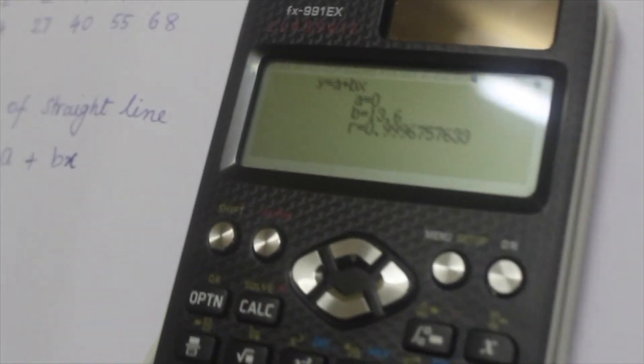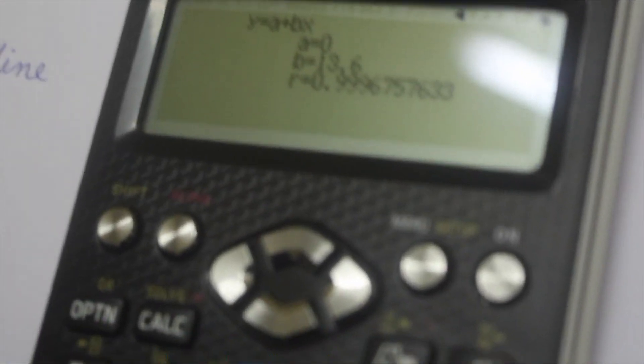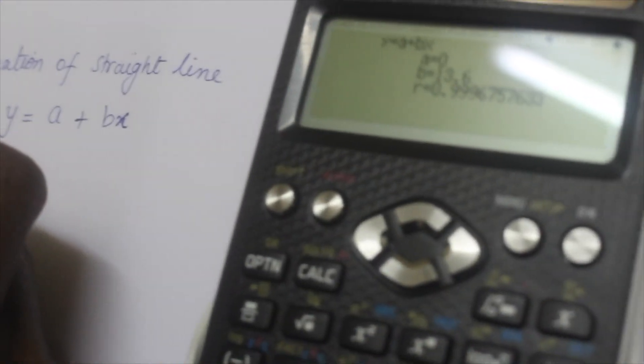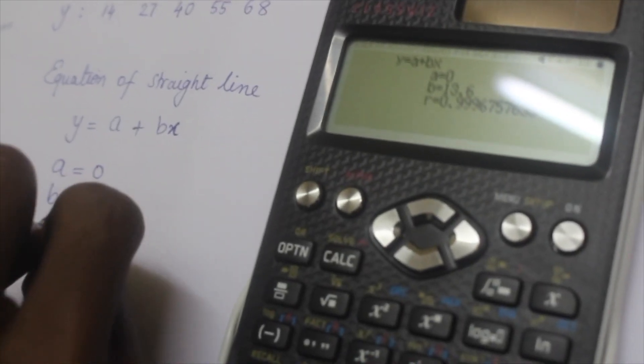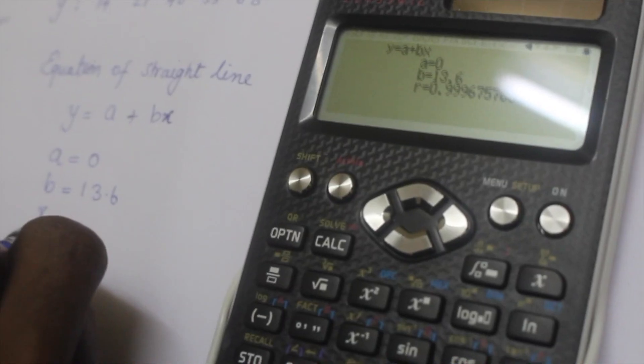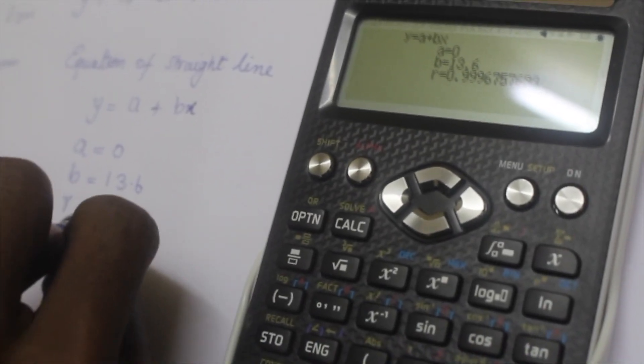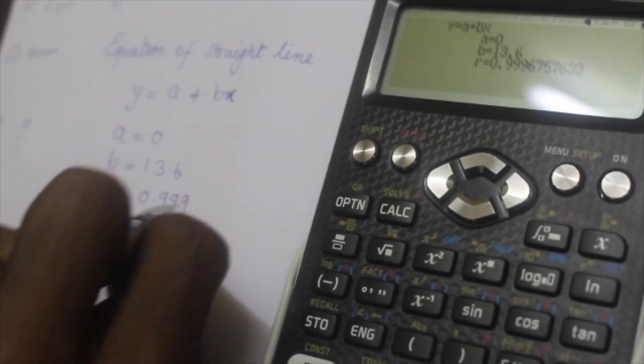You got the equation of the straight line, which is value of a is equal to 0 and value of b is equal to 13.6, and the regression coefficient r is equal to 0.999 approximately.